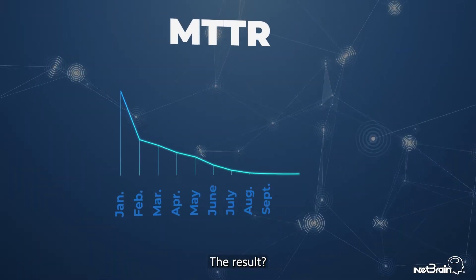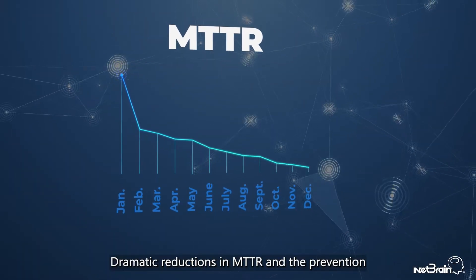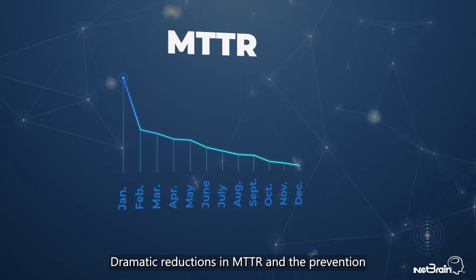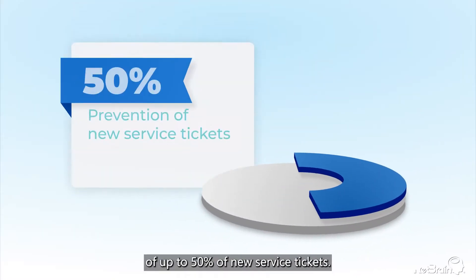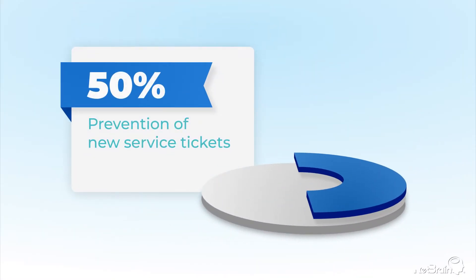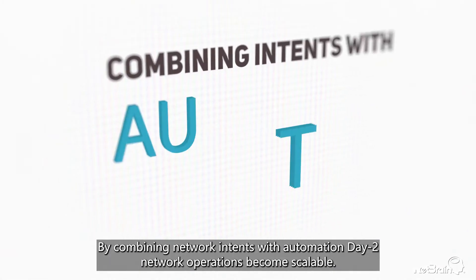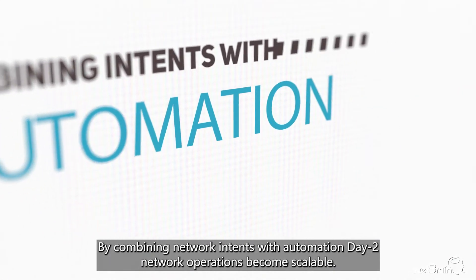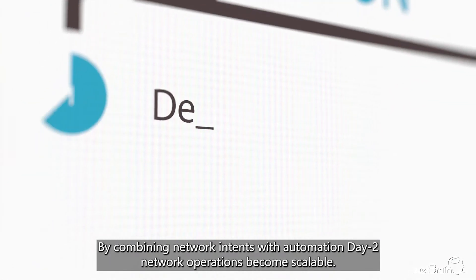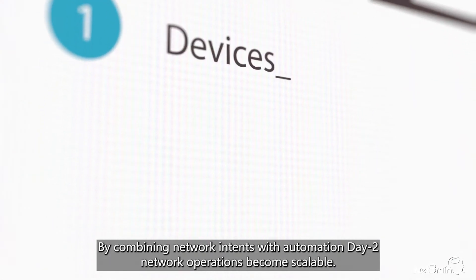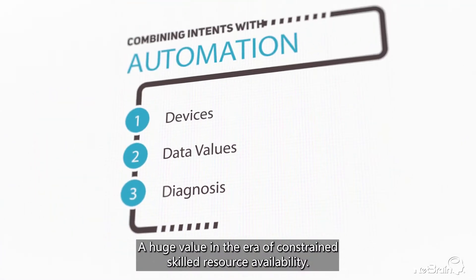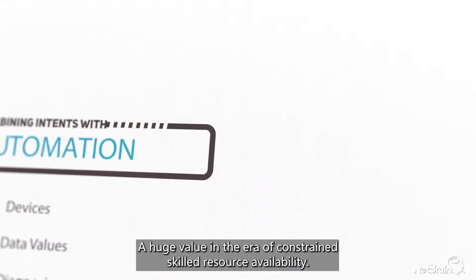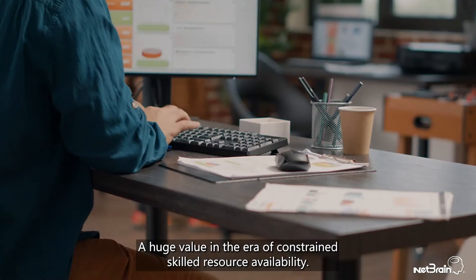The result? Dramatic reductions in MTTR and the prevention of up to 50% of new service tickets. By combining Network Intents with automation, day-to-day network operations become scalable — a huge value in the era of constrained skilled resource availability.